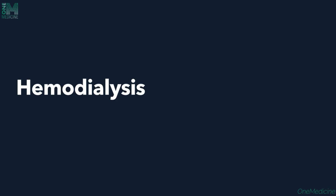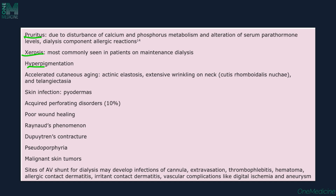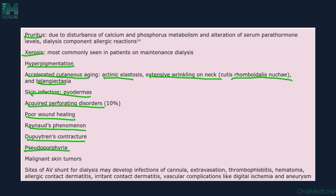Coming to manifestations of hemodialysis: patients can have pruritus, xerosis, hyperpigmentation, and accelerated signs of cutaneous aging like actinic elastosis and extensive wrinkling of the neck called cutis rhomboidalis nuchae and telangiectasia. Patients are prone to infections causing pyodermas. Acquired perforating disorders, poor wound healing, Raynaud's phenomenon, Dupuytren's contracture, pseudoporphyria, and malignant skin tumors are also seen. At the sites of AV shunt, patients can develop infections of the cannula, extravasation of blood, thrombophlebitis, hematomas, allergic contact dermatitis, irritant contact dermatitis, and vascular complications like digital ischemia and aneurysms.